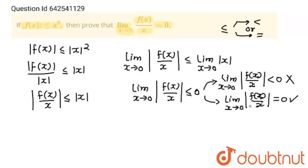Now we can remove this mod sign and that is 0. When we remove mod sign, we remove by one rule: by making plus minus that number, and plus minus 0 is equal to 0. So, lim x→0 f(x)/x = 0. Hence, this is proved. Thank you, students.